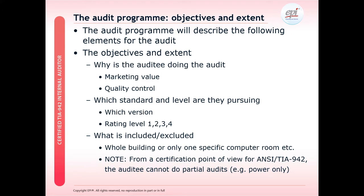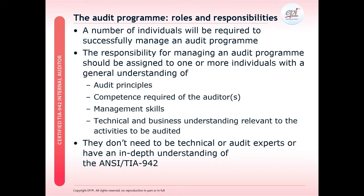We also need to consider what is included and what is excluded within the audit programme. Is it the whole building? Is it the facility and some computer rooms? Or one specific computer room? From a TIA 942 audit, from a certification point of view, we cannot do a partial audit covering just power, just mechanical, or just architecture. We need to do the whole system covering telecom, electrical, architecture and mechanical.